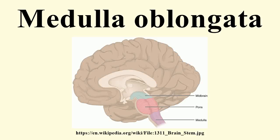The medulla oblongata is located in the hindbrain, anterior to the cerebellum. It is a cone-shaped neuronal mass responsible for multiple autonomic functions ranging from vomiting to sneezing.